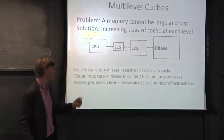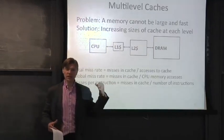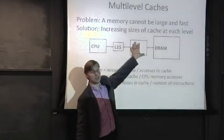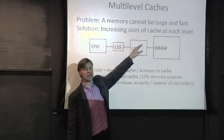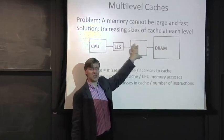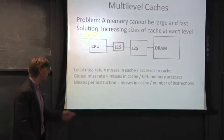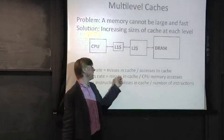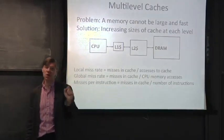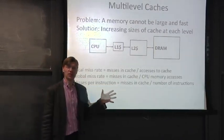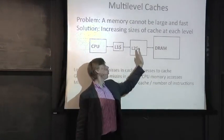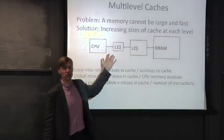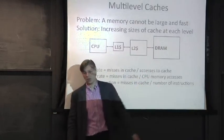The first notion is the local cache miss rate — simply the number of misses in a cache versus the number of accesses in that cache, local to each particular cache level. The second notion is the global cache miss rate, which takes the number of misses in the cache relative to the total number of CPU memory accesses. The global miss rate is often a better metric in a multi-level hierarchy because it encapsulates both levels together.